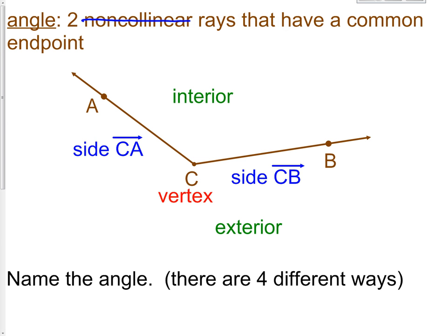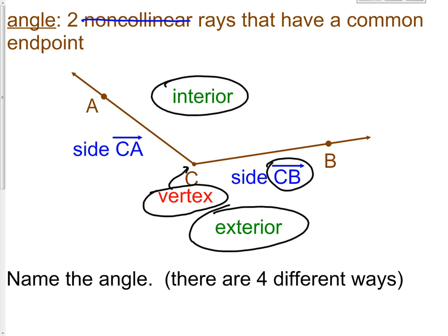Now, there are a few points to a ray. We have the interior. We have the exterior. We have the vertex, which is this point right here that has a C by it. Then we have a side. Notice how it has the ray symbol. That is because the two sides of an angle are rays. So we have one, two, three, four, five different parts that we need to know when we talk about angles.